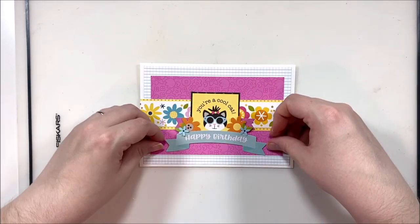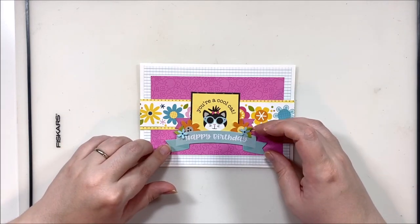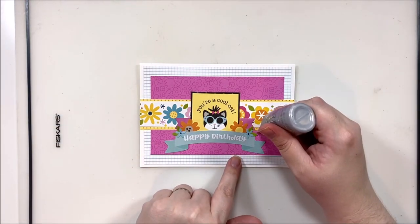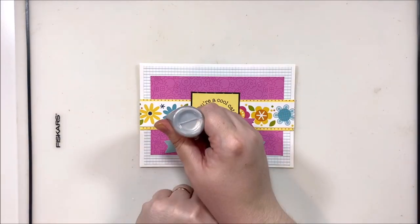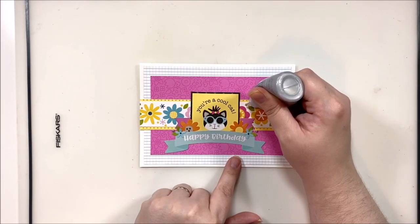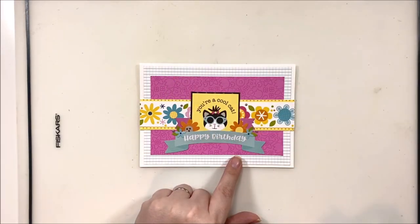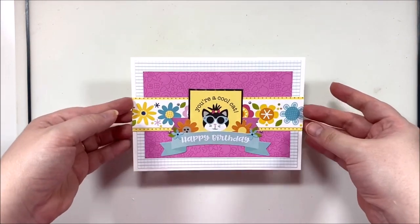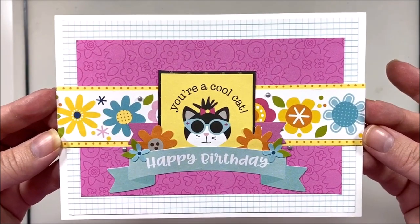This one came together really quickly, really easily. Of course I'm adding just a wee bit of Nuvo as well around the florals, around my little clusters, and even added it into the design in a couple of spots. So that's this one done, super quick, super easy, and that's all of them done.